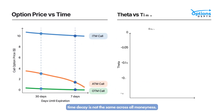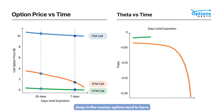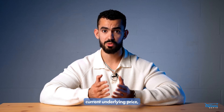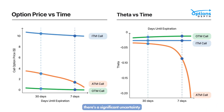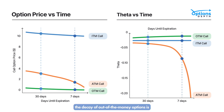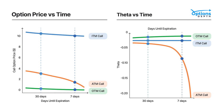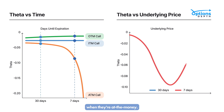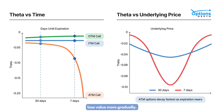Time decay is not the same across all moneyness levels. Deep in the money options tend to have less sensitivity to time decay because most of their worth is intrinsic value. At the money options have the largest amount of extrinsic value and therefore lose value the fastest. Because their strike is very close to the current underlying price, there's significant uncertainty whether they'll finish in the money or out of the money, and as time runs out, that uncertainty and extrinsic value quickly fades away. The decay of out of the money options is slower than at the money since they have less extrinsic value, but they can quickly collapse towards zero if the underlying never moves favorably before expiration. To conclude, Theta impacts options the most when they're at the money; deep in the money and far out of the money contracts lose value more gradually, but they're still subject to time decay, especially as expiration draws near.